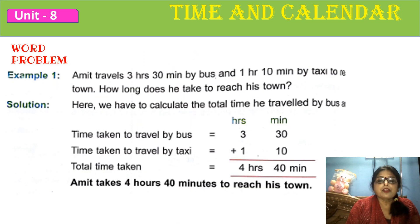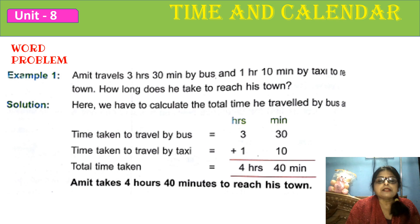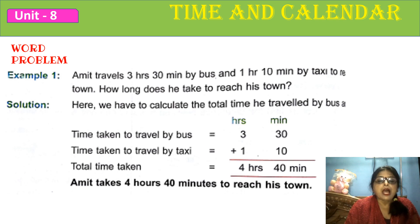My dear students, the time and calendar chapter is going on. Today, I am going to start word problems of time and calendar. Here, some examples of time and calendar are given. First example: Amit travels 3 hours 30 minutes by bus and 1 hour 10 minutes by taxi to reach town. How long does he take to reach his town? So, here we have to calculate the total travel time of Amit.